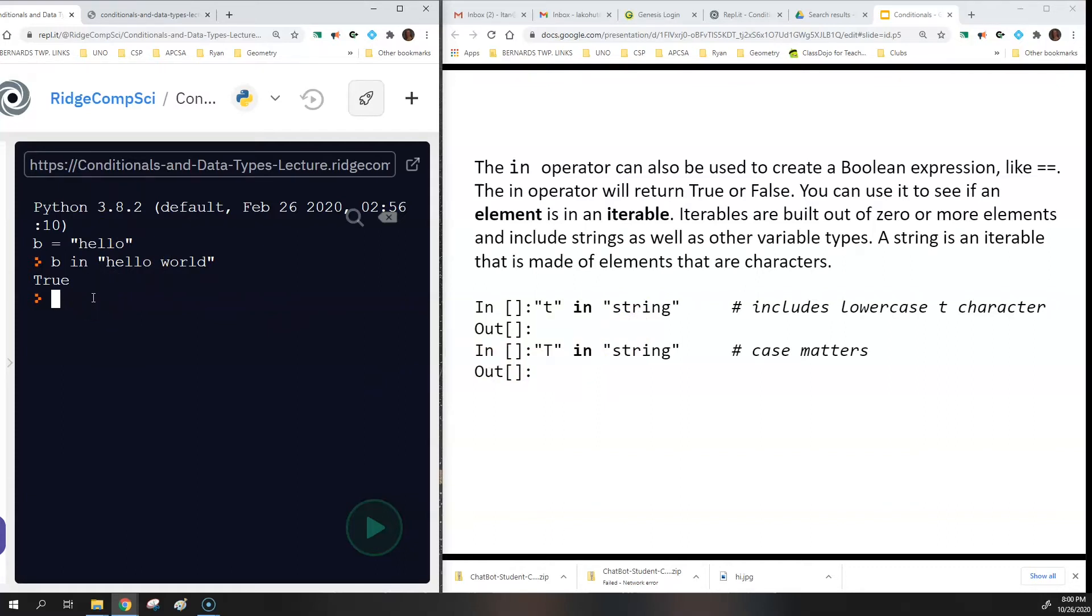Now you could also use just literal strings. So you can say is O in B. And that would be true because O is in the value of B, which is hello. You can also say not in B. So you could say B not in hello world. And then that should return false because B is in hello world. So B is not not in hello world.